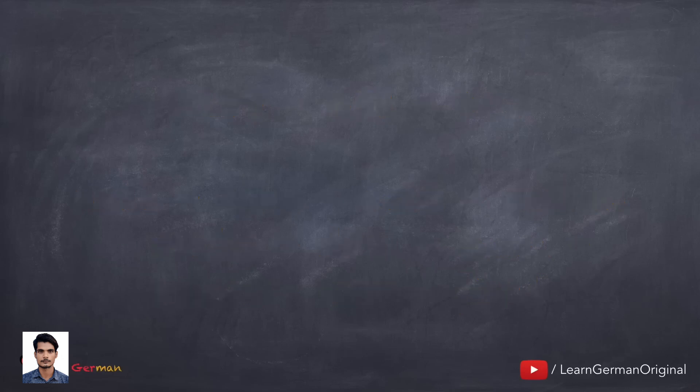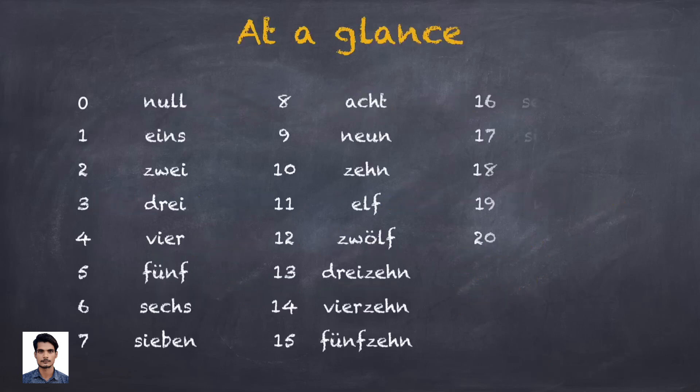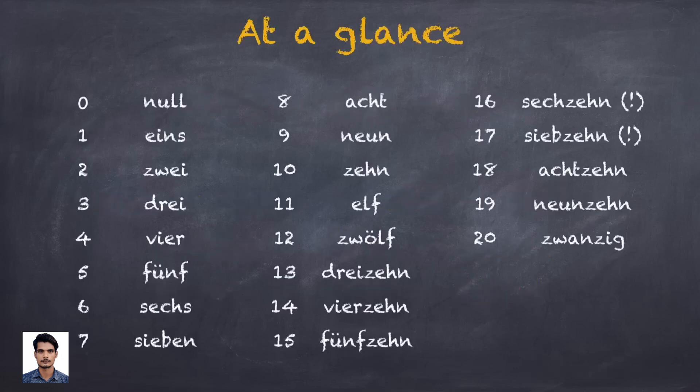Let's summarize the numbers from 0 to 20 once again. I'll speak and you repeat after me. Don't forget the two exceptions: 16 and 17.